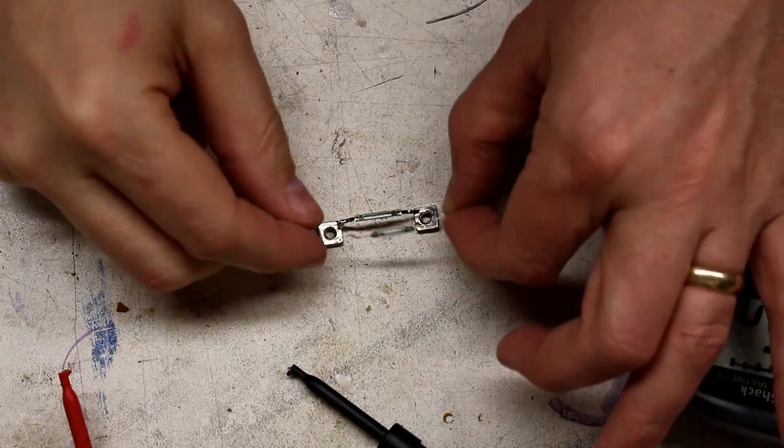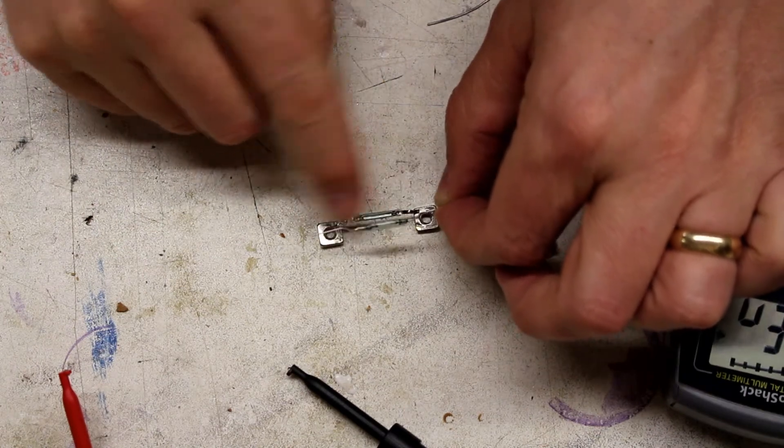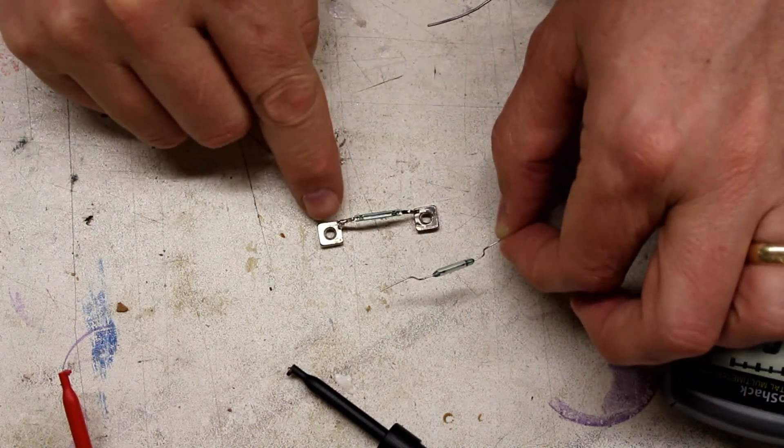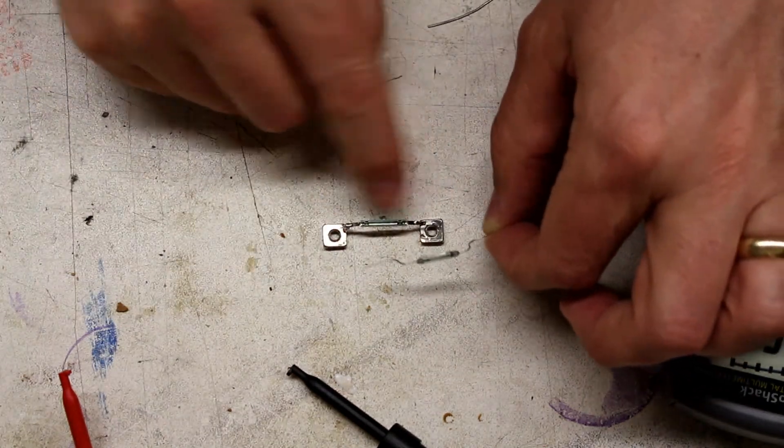So here you can see the reed switch and I'm going to basically tie it in in parallel to this. And then I will cut the other one back out when I'm finished. And all I have to do then is reassemble it.